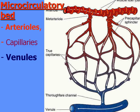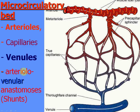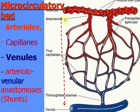The first component of the microcirculatory bed is the arteriole-venule anastomosis, or shunts. They bring blood from arterioles directly to venules, outside the capillary network. This way, when the shunt is open, all blood enters the shunt and reaches the venule. This is necessary for regulation of local blood supply of organs and tissues.